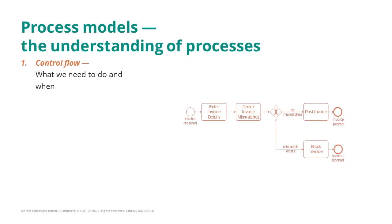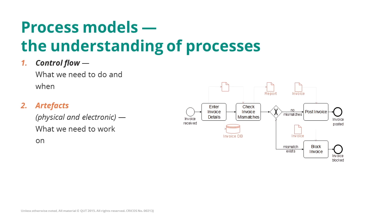A process model captures three main perspectives of a business process. The first is the control flow, which is the chain of activities, events and decisions performed as part of the process. The second is the artefacts — the business objects that are manipulated in the business process,